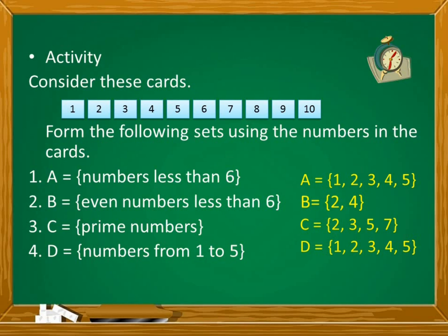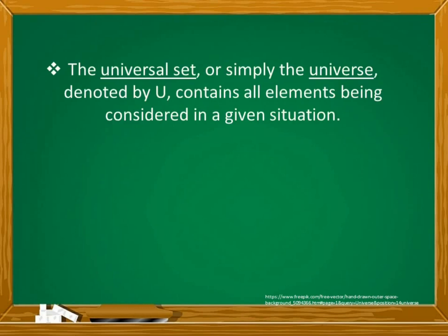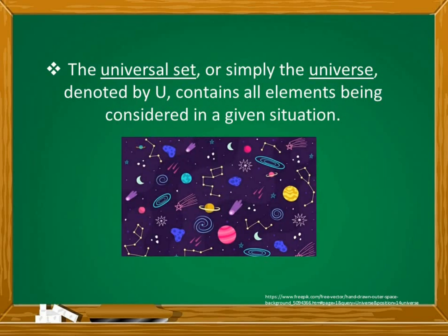Very good students! Let us continue our discussion. The universal set, or simply the universe, denoted by a capital letter U, contains all elements being considered in a given situation. When we say universe, it is something that contains everything that you can possibly think of.